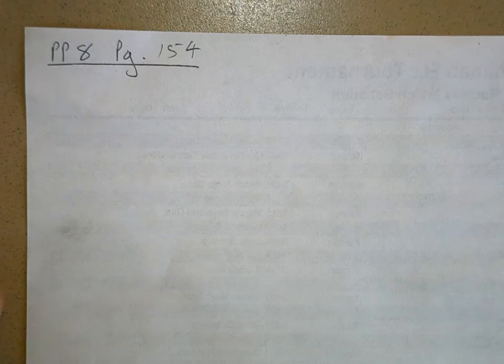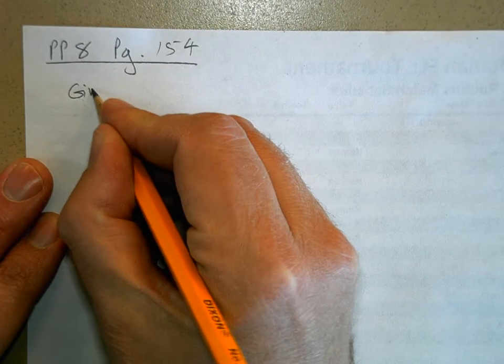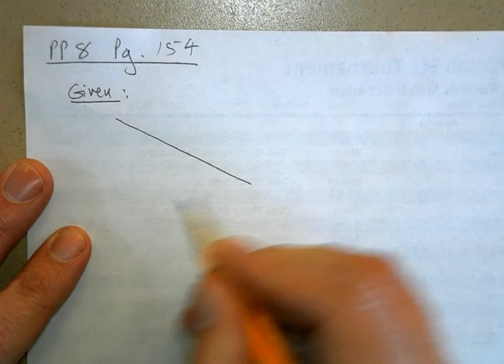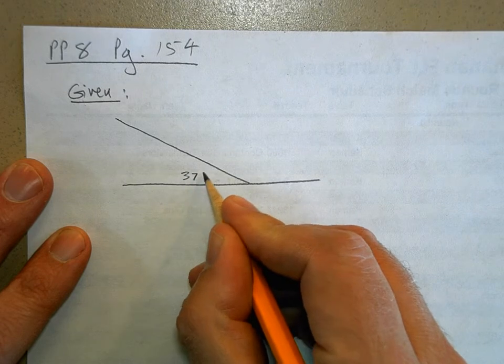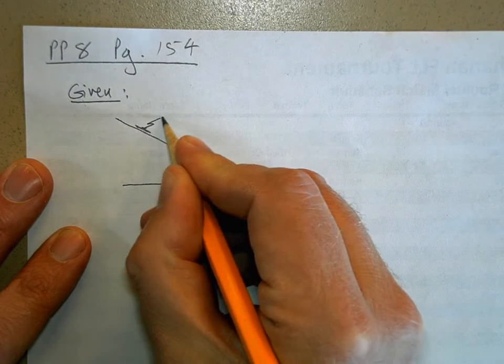So here's the slope. This is what's given. Let's say this is 37 degrees and here's our skier moving down the slope.